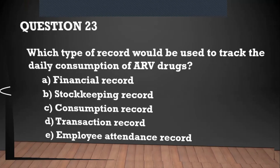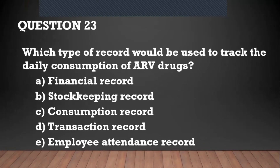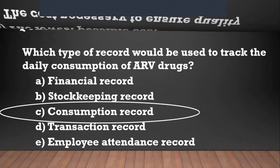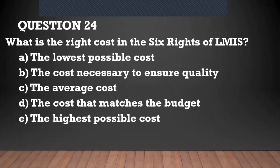Question number twenty-three: which type of record would be used to track the daily consumption of ARV drugs? Anything that has to do with usage or consumption — the answer is a consumption record.